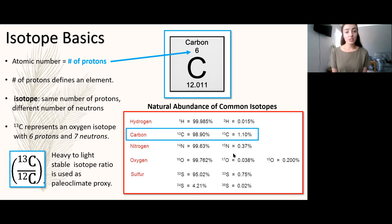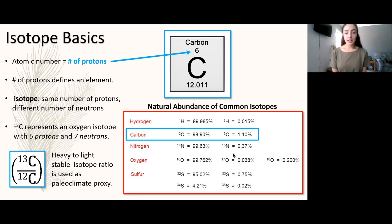First, just to start with the absolute basics - I covered isotope basics in the first stable isotope video, the oxygen isotope one, so if you've seen that you can skip the next few minutes. Basically, isotopes have the same number of protons but different numbers of neutrons. We write isotopes in special notation showing at the top left corner of each elemental letter the number of protons and neutrons added together. For example, carbon with six protons and six neutrons makes carbon-12. Another carbon isotope has seven neutrons but still six protons, so it's carbon-13 because six plus seven is 13.